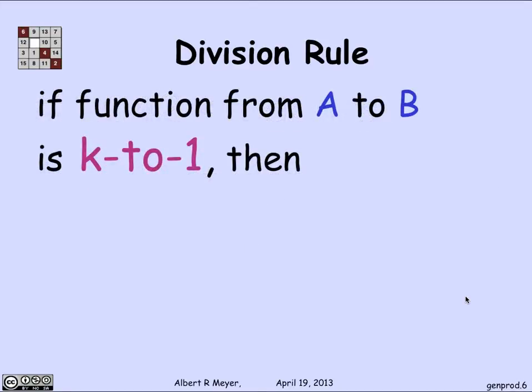So in general, the division rule can be stated this way. If I have a total function from a set A to a set B, domain A codomain B, and this mapping is k to 1, then the cardinality of A is simply k times the cardinality of B. So k to 1 means that exactly k A elements hit each B element. Another way to say it is that there are exactly k arrows into every element of B. So then the number of arrows is simply k times B, and if you have a total function on A, the number of arrows is equal to the size of A, and that's where we get the formula.